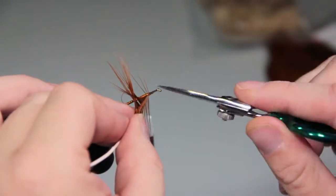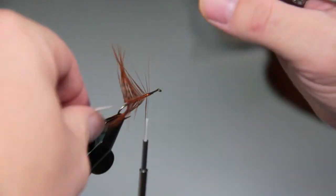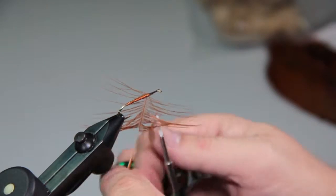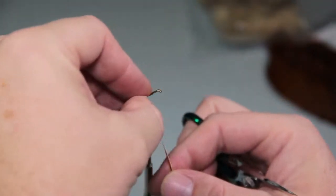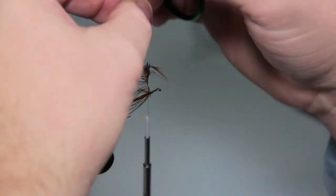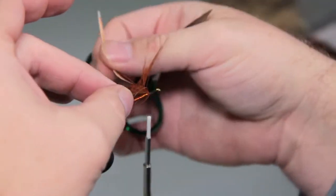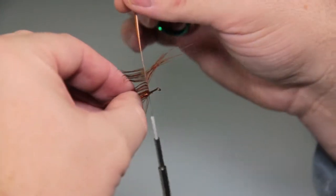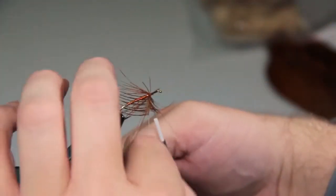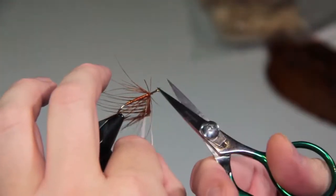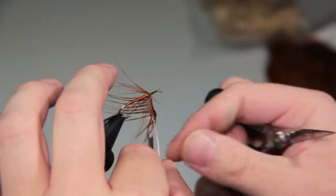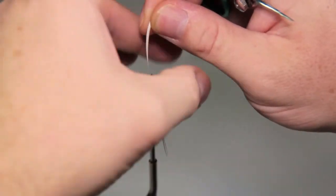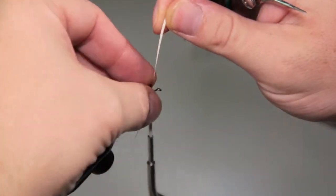Tease the hackle a little bit. Poor man's hackle folder. There's one full turn. Two full turns. You can see some shorties. Just take them out along the way. That's good.